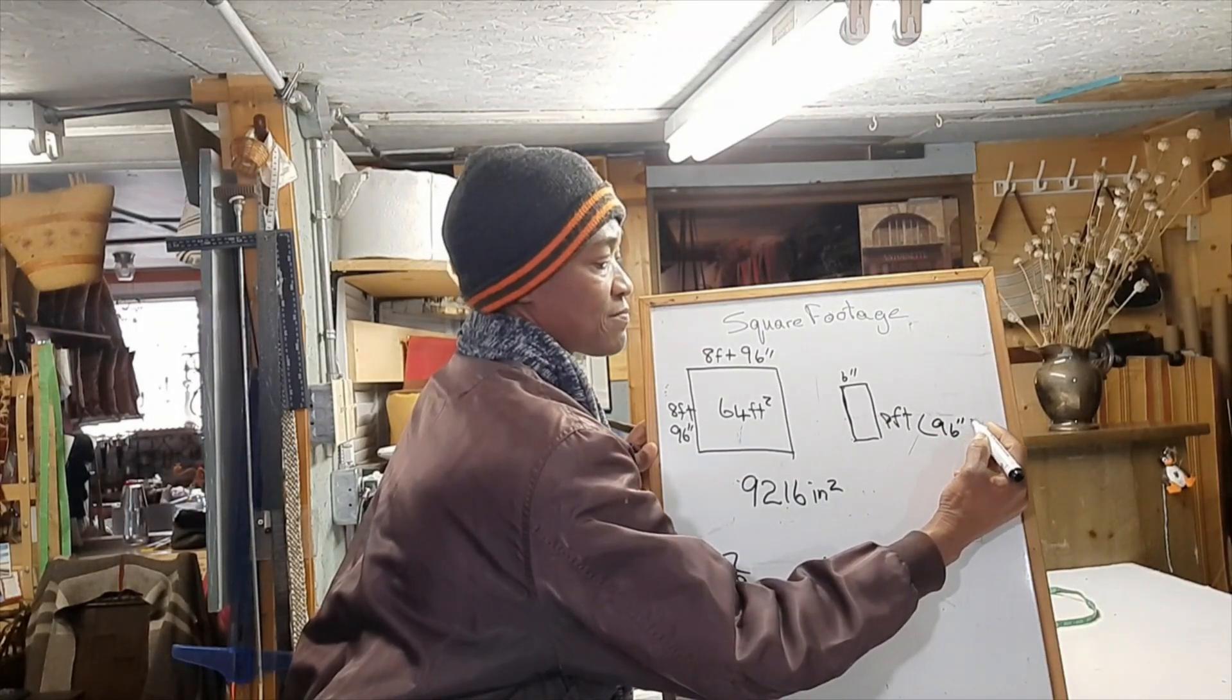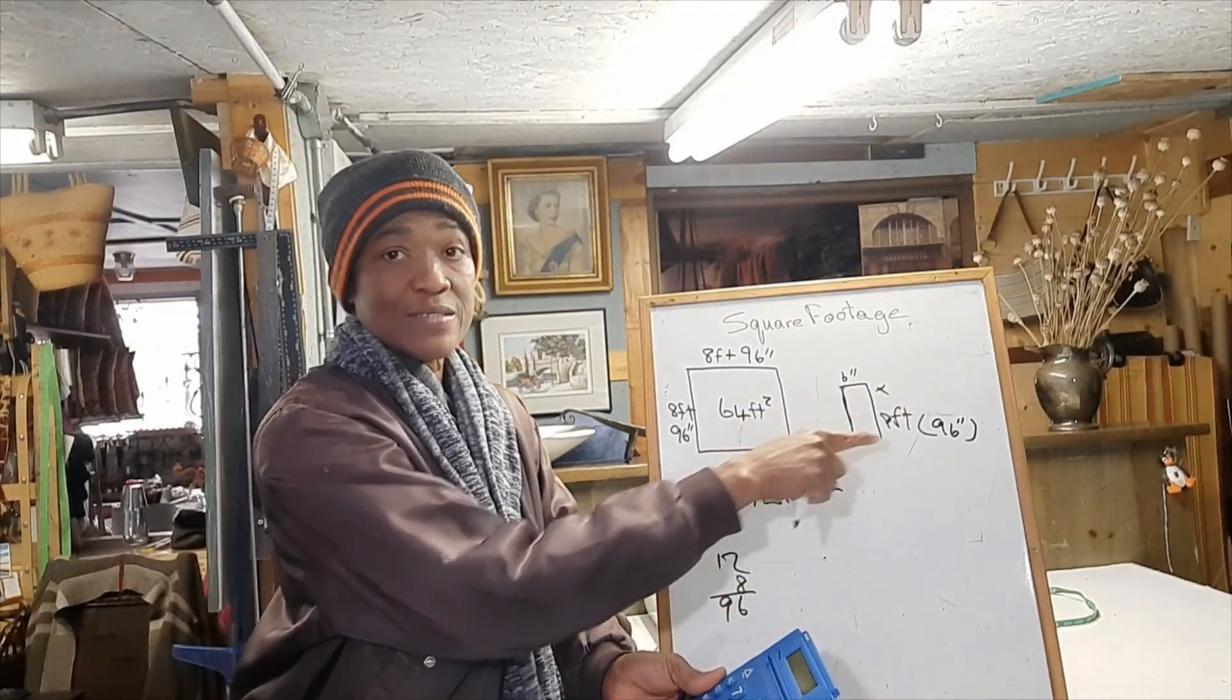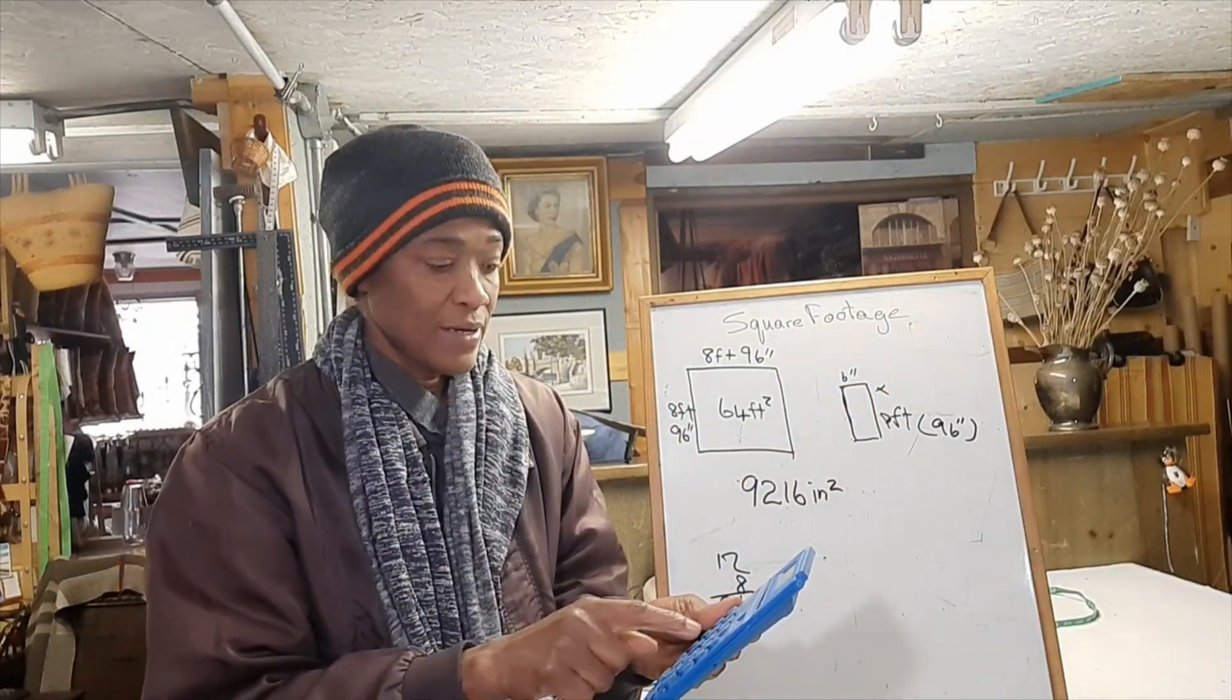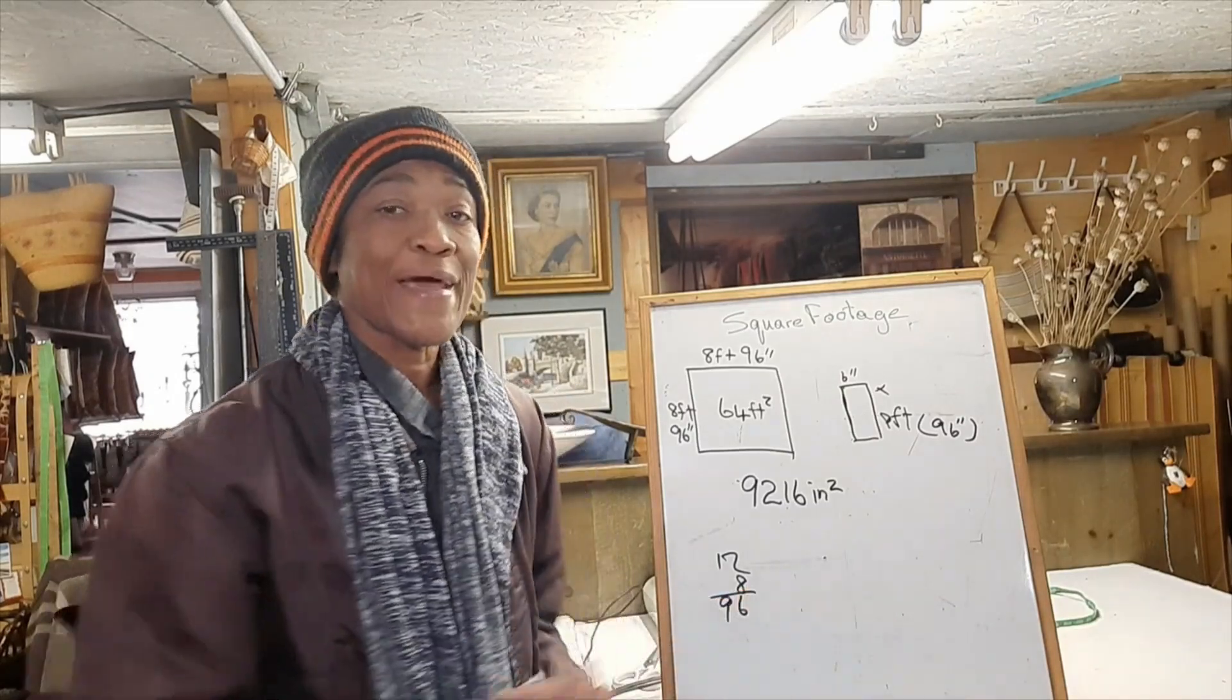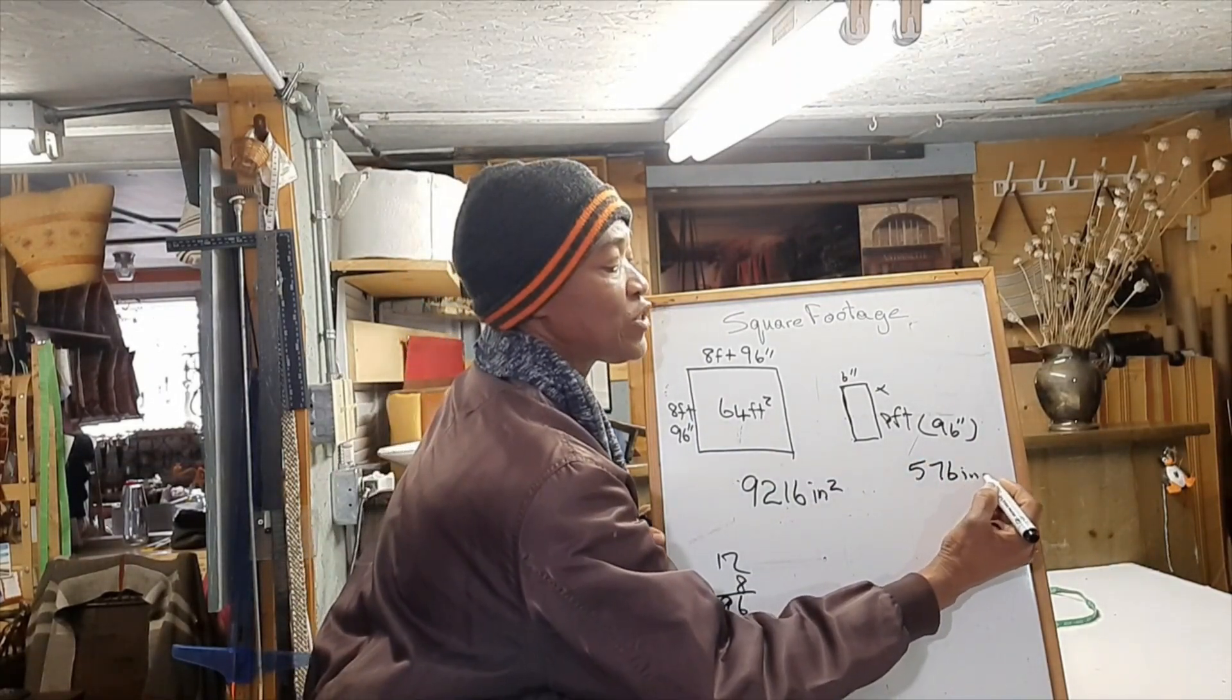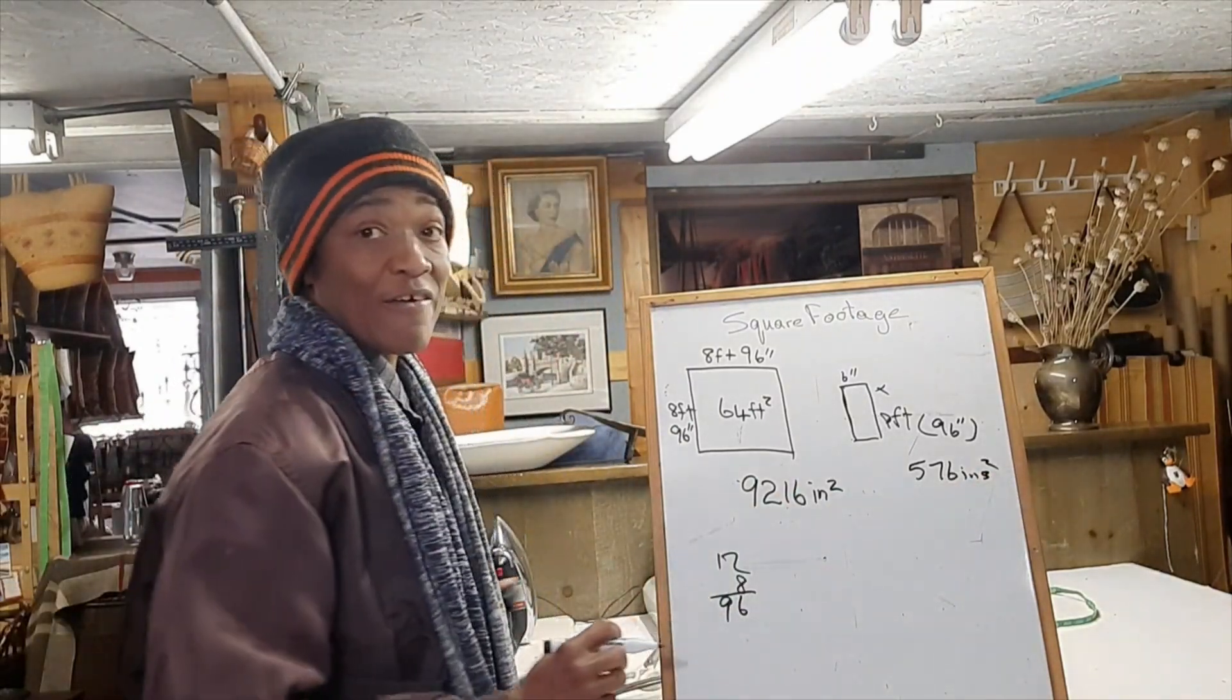96 inches times 6 will give us the square inches for each plank. So that's 96 times 6 equals 576—576 square inches.